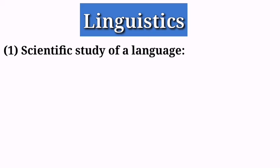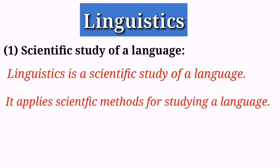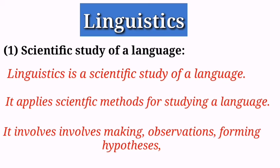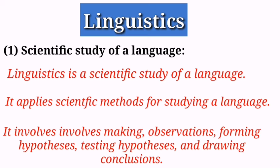Linguistics is a scientific study of language. It applies the scientific method to the study of language. As you know, a scientific method is a process of inquiry that involves making observations, forming hypotheses, testing hypotheses, and drawing conclusions. So all these scientific steps and methods are used in order to study a language.